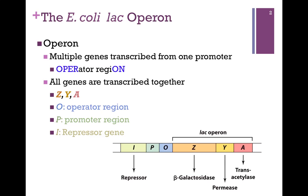These operons often involve genes associated with metabolic pathways, so you either need all of the genes in that pathway or none of them. We don't see this type of arrangement of operons in eukaryotic systems. Instead, our genes are transcribed and regulated in other ways as we saw in our previous lesson.